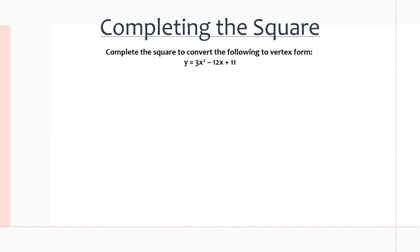Let's get right into the first example. First thing we want to do is use completing the square to put our quadratic into vertex form to then find our maximum values. The question says: complete the square to convert the following to vertex form, and the quadratic is y equals 3x squared minus 12x plus 11.